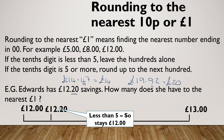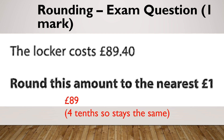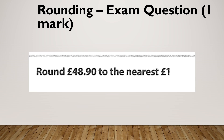Check out my video on rounding to the nearest 10 or 100 for more practice on rounding. Now in an exam, it might look like this. The locker room costs £89.40 — round this to the nearest pound. Did you get £89? Because this is a 4 in the 10 pences, it rounds down to £89. Round £48.90 to the nearest pound — did you get £49? Because this is a 9, it's rounding up. If you've written £49.00, that's fine too.